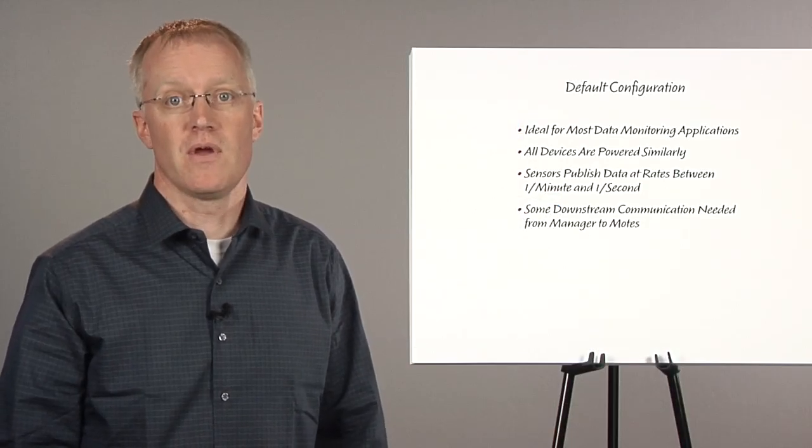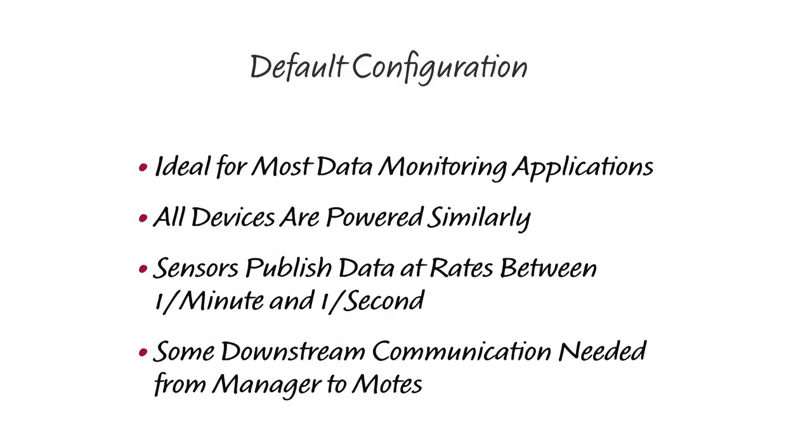The factory default configuration of the network is an excellent choice for most monitoring applications. It assumes that all devices are powered similarly, for example, when all devices are battery powered. This is a good setup for sensor applications that will publish data in the range of once per minute to once per second.